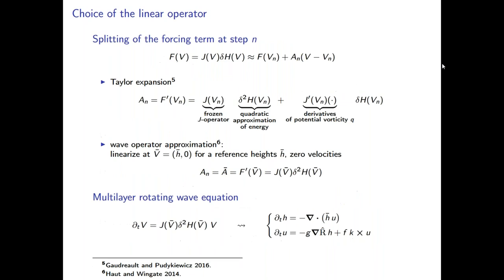And so how do we choose this linear operator here? Well, the easiest idea is always to use a Taylor expansion, but the resulting operator is not so nice. So the trick that we apply is we always linearize around a reference configuration for arbitrary layer heights, but we set the velocities to zero. And then we obtain this operator with a nice Hamiltonian structure. And if you look at it, it corresponds to a multi-layer rotating wave equation.